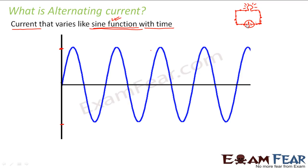So when we talk about direct current, all the electrons are moving along one particular direction — for example, the anti-clockwise direction. The name itself says it: 'direct' means straight and one direction, while 'alternating' means something is happening alternately. So in alternating current, the electrons are moving back and forth — sounds interesting!